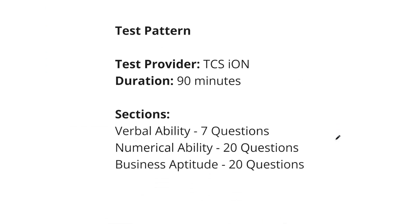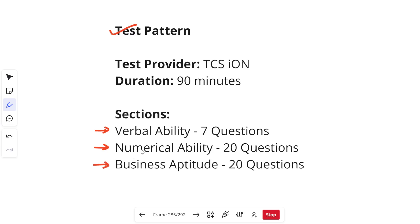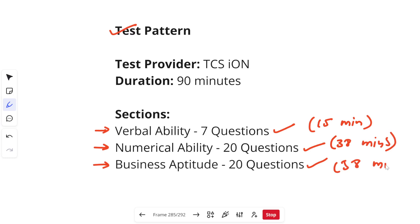Let's start with the test pattern for TCS MBA. There are three sections: Verbal Ability, Numerical Ability, and Business Aptitude. In Verbal Ability you get 7 questions, in Numerical Ability 20 questions, and in Business Aptitude 20 questions. The time allocation is roughly 15 minutes for Verbal, around 38 minutes each for Numerical and Business Aptitude, making the overall duration 90 minutes.